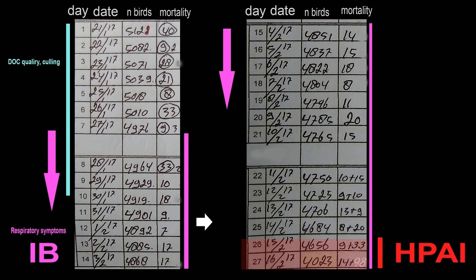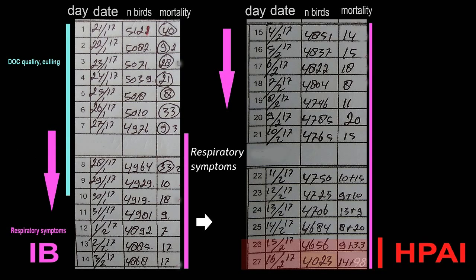This is Farm B data, house 5. In the first week, there were cases of aspergillosis, so many chicks were culled. In the second week, respiratory symptoms were found starting in one pen and spread quickly to all the pens and to all the houses on the farm — this is infectious bronchitis. There was a slight increase in mortality rate caused by this disease.